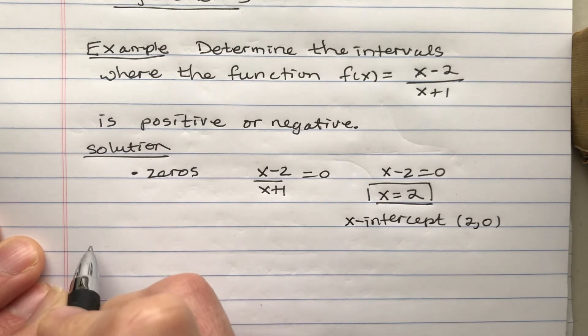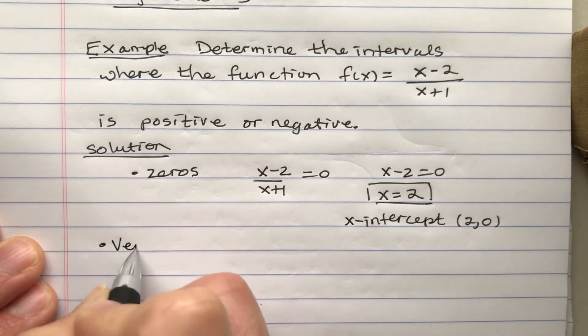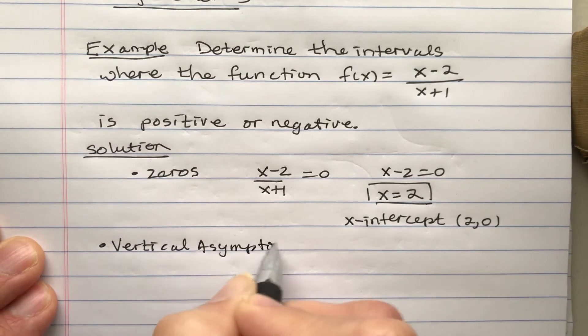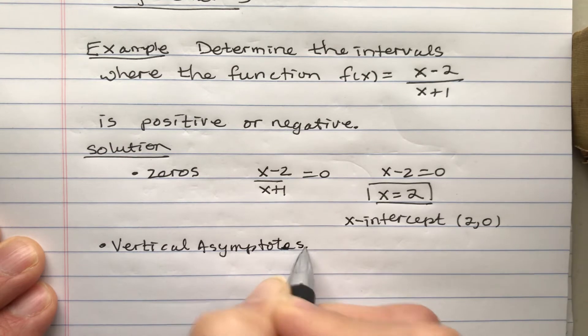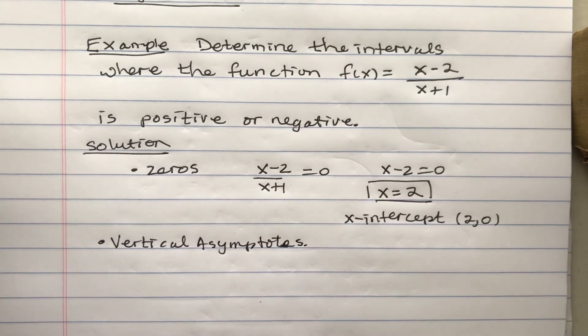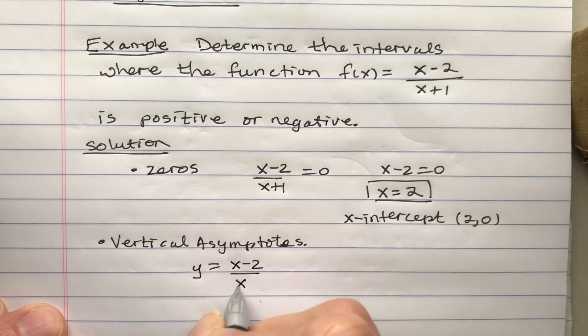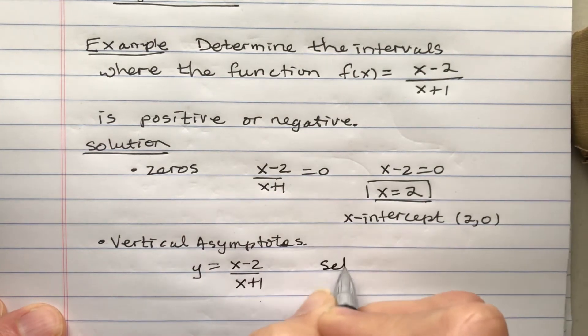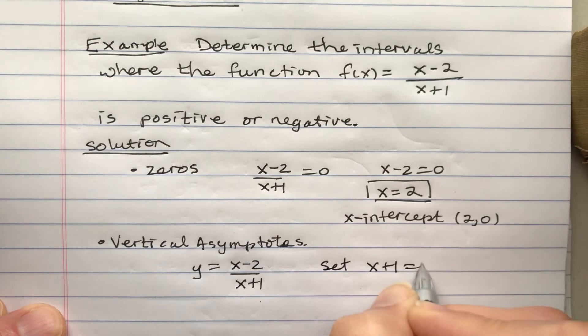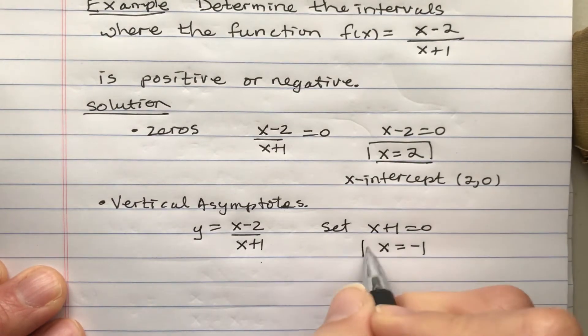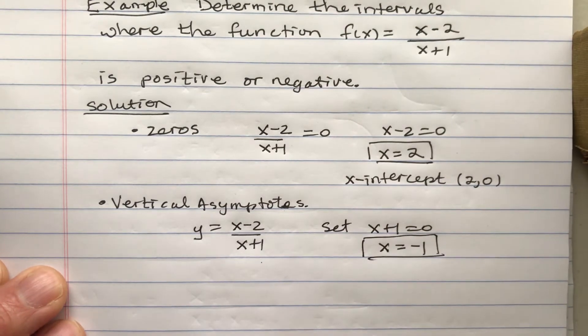And then look at vertical asymptotes. Vertical asymptotes correspond to numbers that are not in the domain. So if I look at y equals x minus 2 over x plus 1, we set x plus 1 equals zero and we get x equals negative 1. And that's a vertical asymptote.